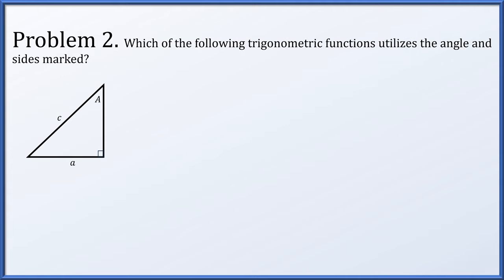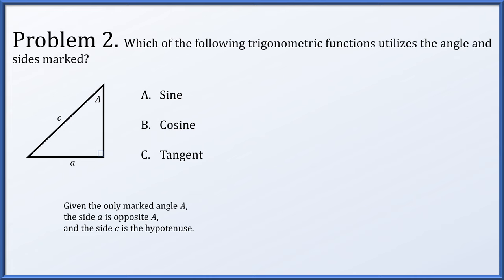In problem 2, which of the following trigonometric functions uses the angle and sides marked? Is it sine, cosine, or tangent? So A is the only marked angle, little a is opposite that angle, and c is the hypotenuse. So sine is opposite over hypotenuse, cosine is adjacent over hypotenuse, and tangent is opposite over adjacent. Which of these uses the opposite side and the hypotenuse? It's sine.